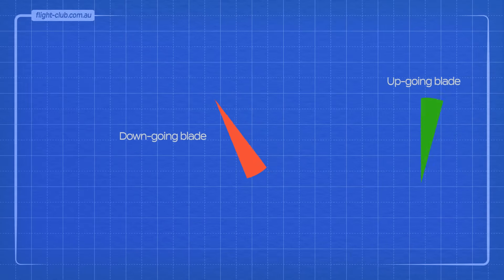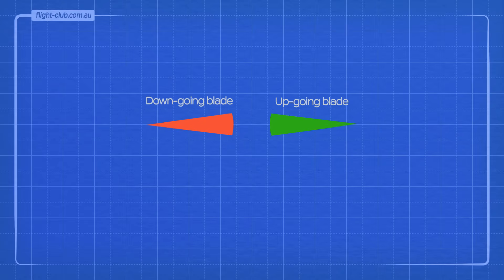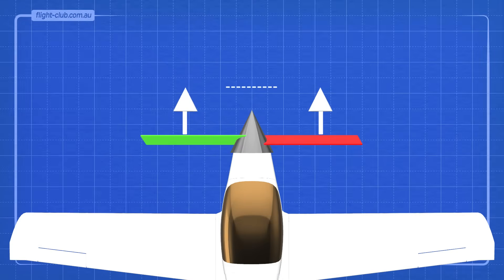Both the up-and-down-going blades each have an angle of attack that is the same in degrees. Both blades produce the same amount of thrust as they rotate.